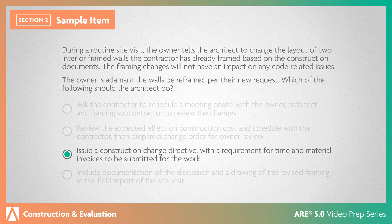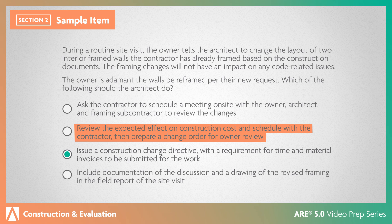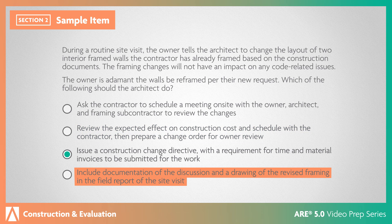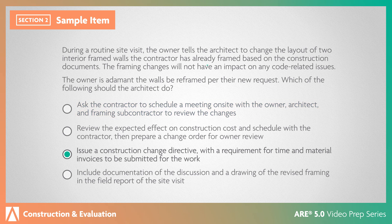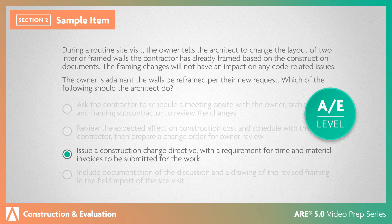Here's the correct answer. Per AIA Document A201-2007, General Conditions of the Contract for Construction, a construction change directive is appropriate when a change must take place regardless of time or cost impacts. Reviewing the expected cost ahead of completing the work is unnecessary in this situation. A field report alone is inadequate because this change certainly has both time and cost impacts. An on-site meeting with the sub is unnecessary as the requested changes can be fully documented by the architect. This is an AE-level item requiring an assessment of a built condition in order to determine the appropriate contract change.